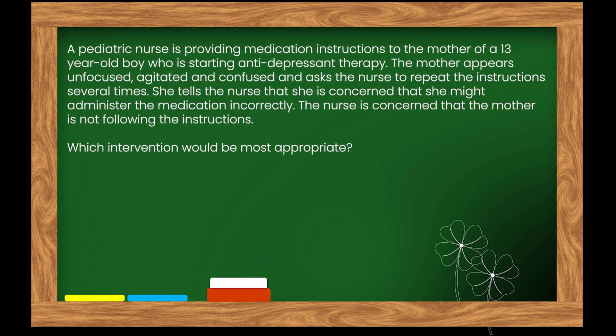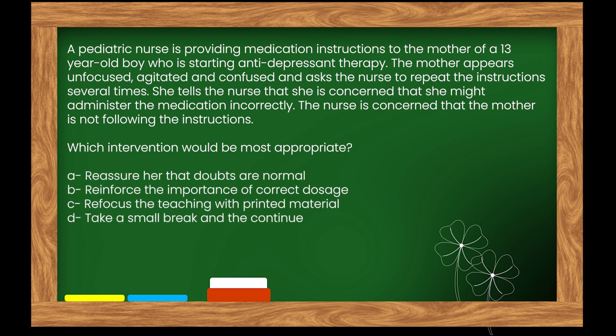Here is our next question. A pediatric nurse is providing medication instructions to the mother of a 13-year-old boy who is starting antidepressant therapy. The mother appears unfocused, agitated, and confused and asks the nurse to repeat the instructions several times. She is concerned she might administer the medication incorrectly. Which intervention would be most appropriate? Options: A. Reassure her that doubts are normal. B. Reinforce the importance of correct dosage. C. Refocus the teaching with printed material. D. Take a small break and then continue.